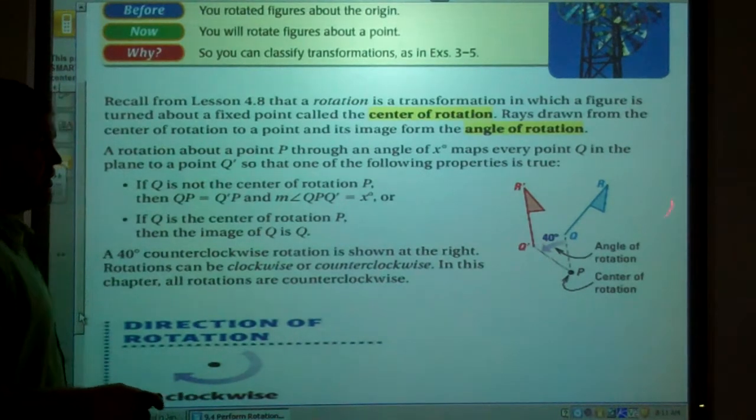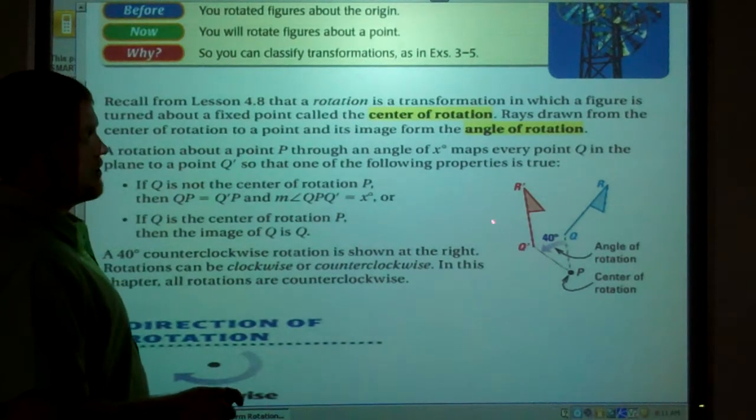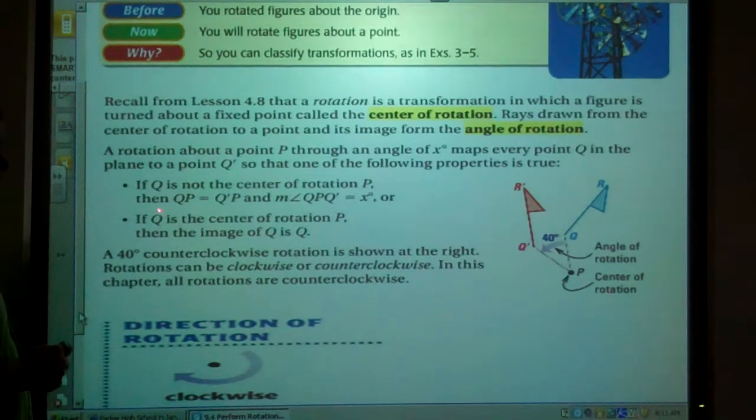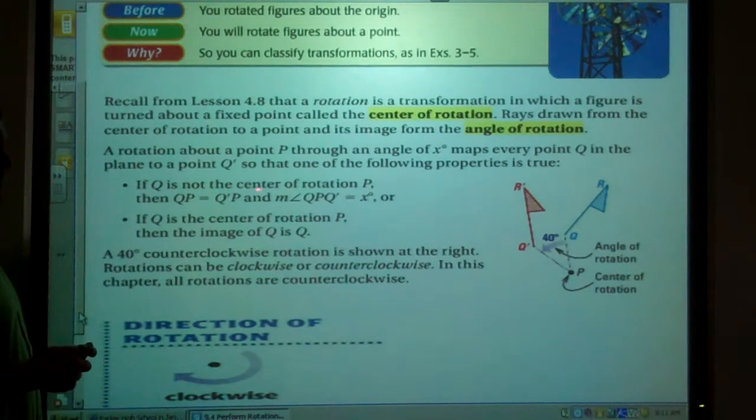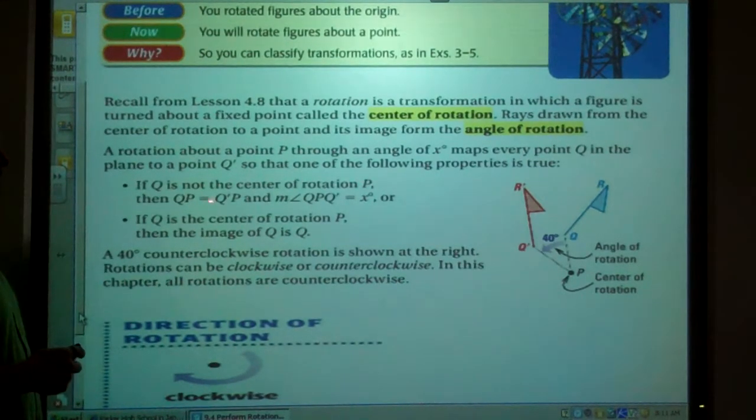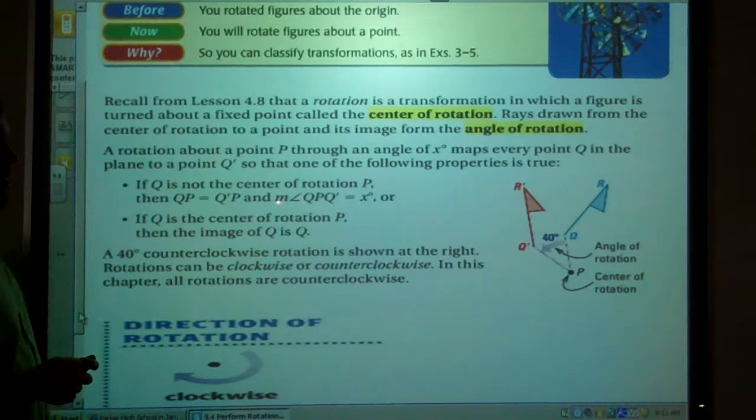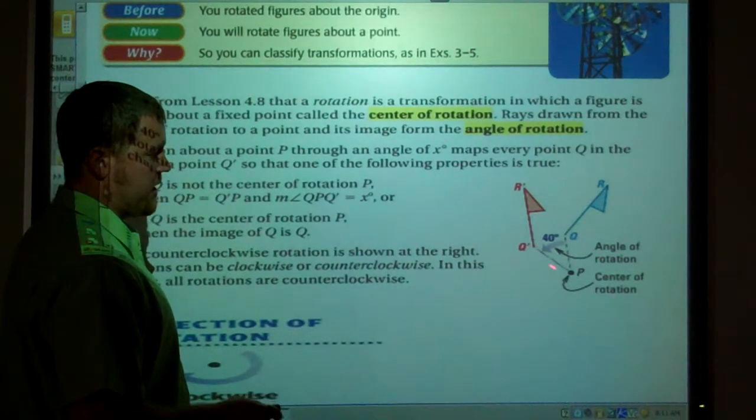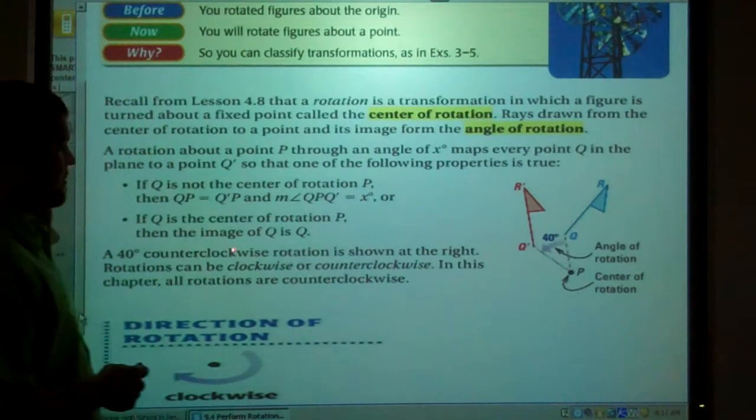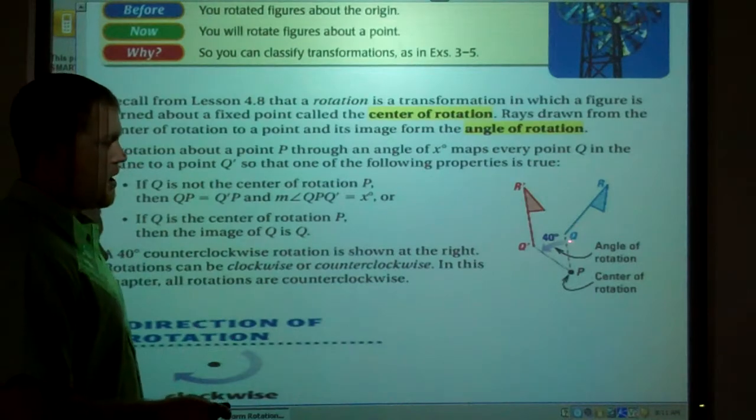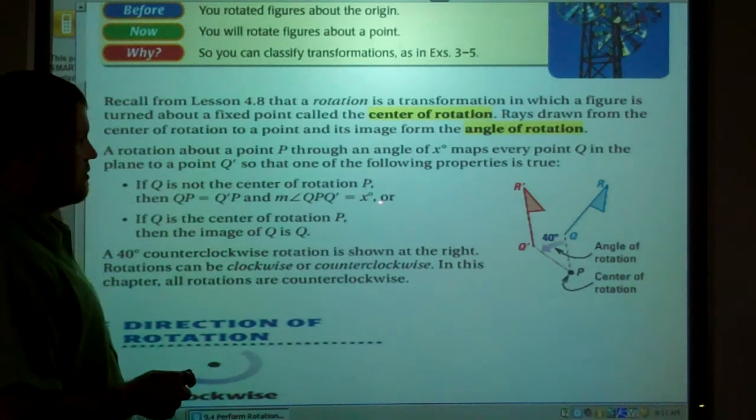And again, rotation is an isometry. The figures are congruent when we rotate them. If Q is not the center of rotation P, then QP equals Q'P. These rays or segments are congruent, and the measure of angle QPQ' equals x degrees.